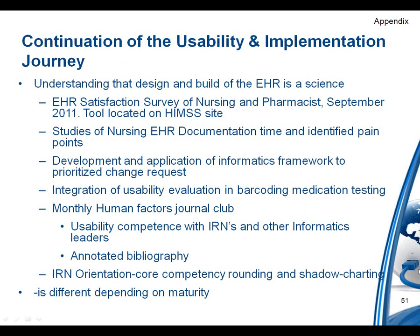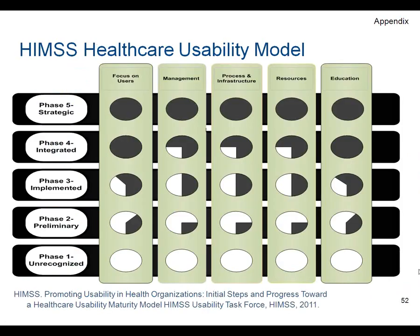There's also information about the usability lessons learned referenced by Donna, and the HIMSS Healthcare Usability Model — essentially an assessment tool. If you look at the different domains, such as focus on users and management, you can assess whether things are done in your organization and score your organization in a phase one through five maturity level for how you've integrated usability into your processes. Each domain is assessed separately, giving a picture of what your organization looks like. The ideal state would be a phase five in all domains.